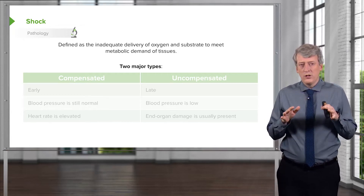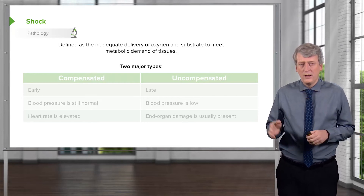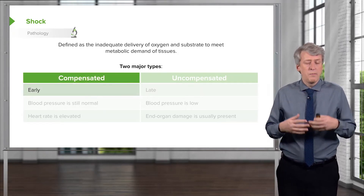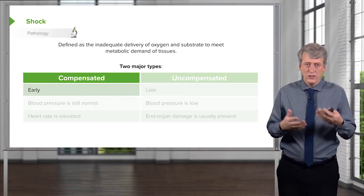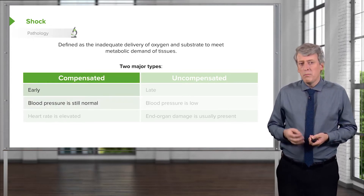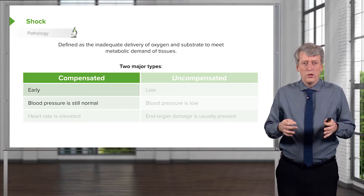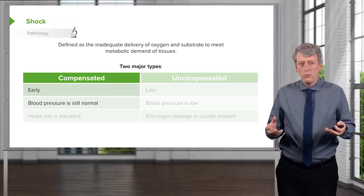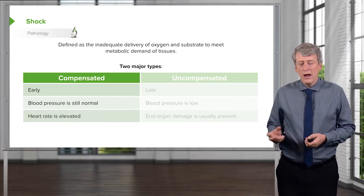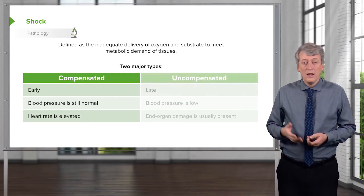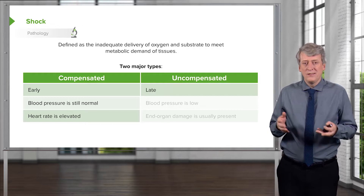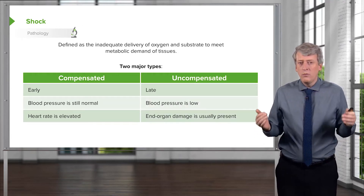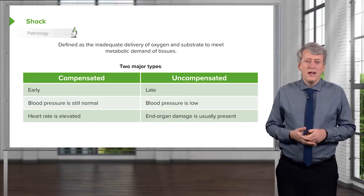We generally break shock down into two types: compensated and uncompensated. Compensated shock usually happens early in the situation causing the shock. Generally, the blood pressure is still normal, so the body accommodates by raising the heart rate. Uncompensated shock happens later, when blood pressure is lower and we can start to see end organ damage.